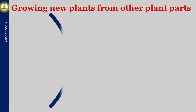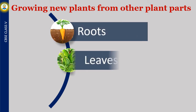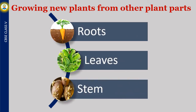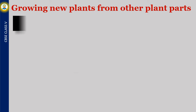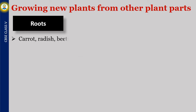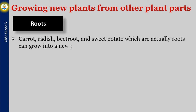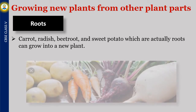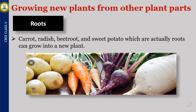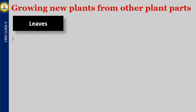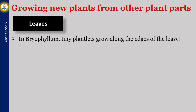Growing new plants from other plant parts. Roots, stems, and leaves also contribute to the growth of a new plant. Carrot, radish, beetroot, and sweet potato, which are actually roots, can grow into a new plant. In bryophyllum, tiny plantlets grow along the edges of the leaves, which grow into adult plants when the leaves fall on moist soil.